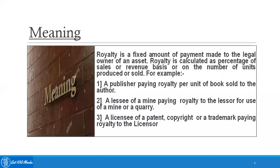For example: one, a publisher paying royalty per unit of books sold to the author. Two, a lessee of a mine paying royalty to the lessor for use of a mine or a quarry. Three, a licensee of a patent, copyright, or a trademark paying royalty to the licensor.